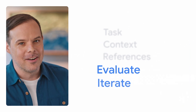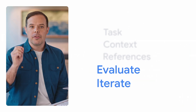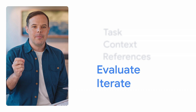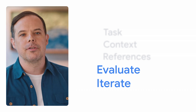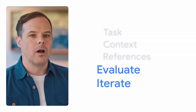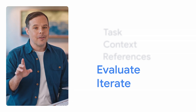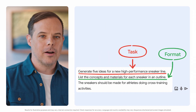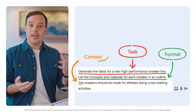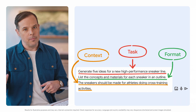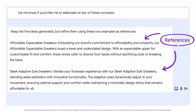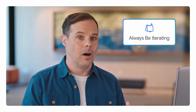Evaluating the output and iterating might be the last parts of our prompting framework, but they're also where we get to experiment and get creative. Each new output is an opportunity to further refine your prompt until you get the response you want. In fact, we've been evaluating and iterating this whole time — we evaluated the sneaker ideas from our first prompt and iterated by adding context, then evaluated again and iterated by adding references. We can always add details or tweak phrasing to change our outputs. We like to say ABI — always be iterating.